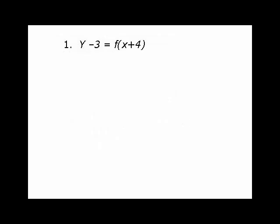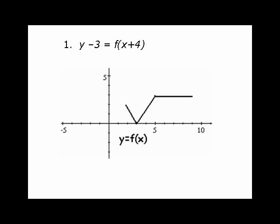For example, y minus 3 is equal to f(x+4). You want to identify first off the nature of the translations. I'm bringing up a graph of this. You need to note that this has been moved 4 units over to the left, based on x plus 4. And then also, it's been moved 3 units up, based on y minus 3.